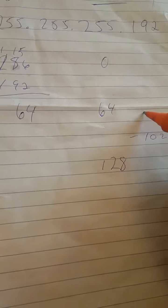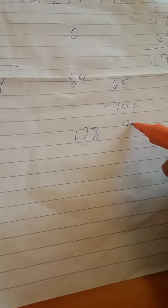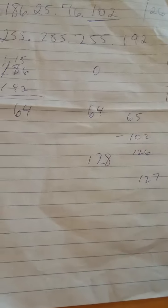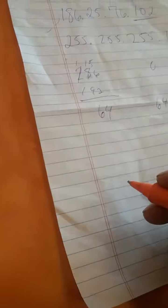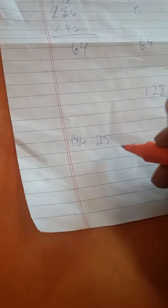So the first usable address will be 65, and then the last usable address will be 126. 127 will be the broadcast address. All my network engineers are following me right here. So it would be 186.25.76.65 will be the first usable host. That will be the first host.